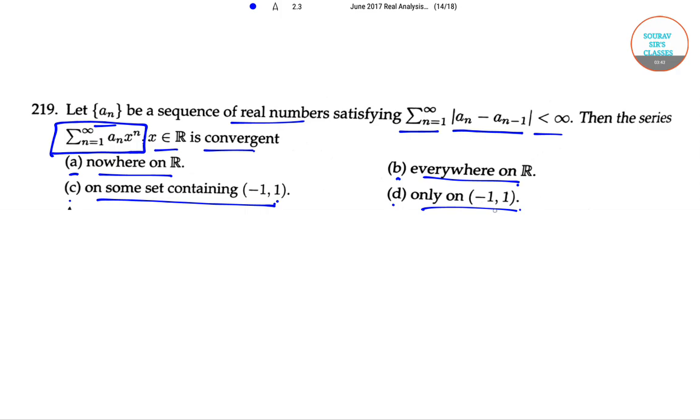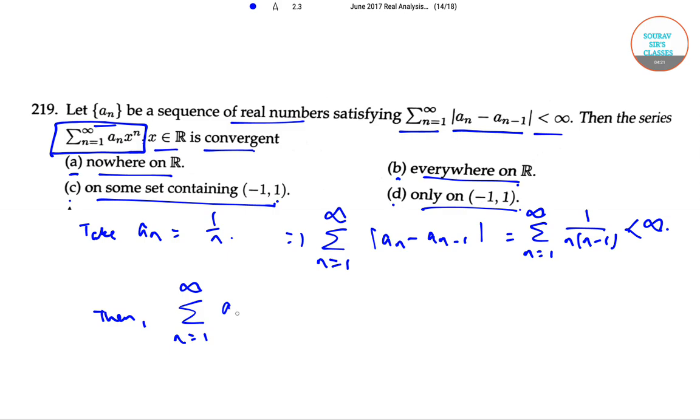Now, take a_n = 1/n, which implies that Σ(n=1 to ∞)|a_n - a_(n-1)| = Σ(n=1 to ∞) x^n/n.